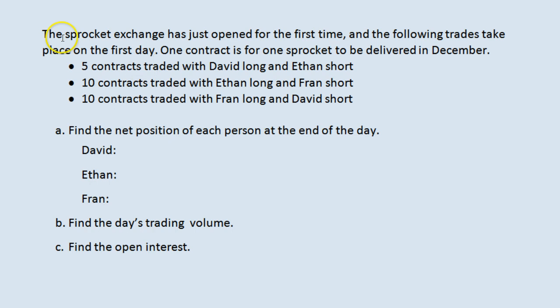In this example, we have a sprocket exchange. It is just open for the first time and some trades are going to take place on the first day. To keep things simple, one contract is for one sprocket to be delivered in December.